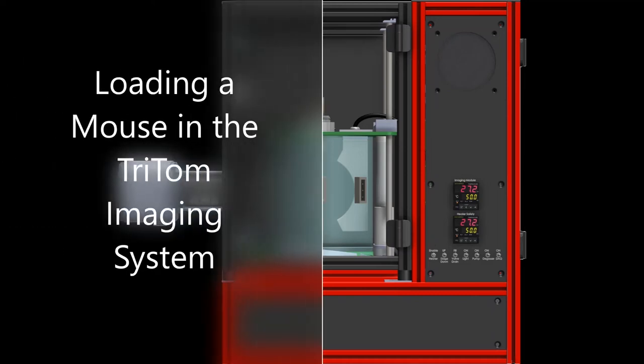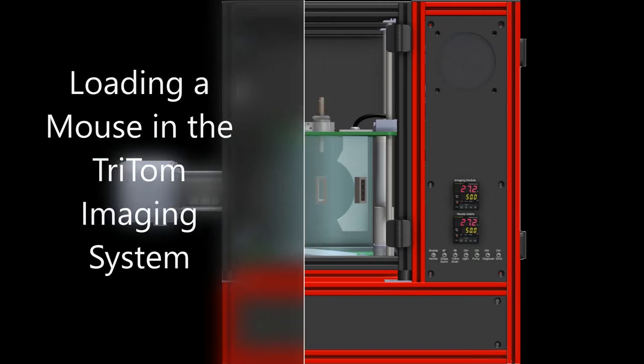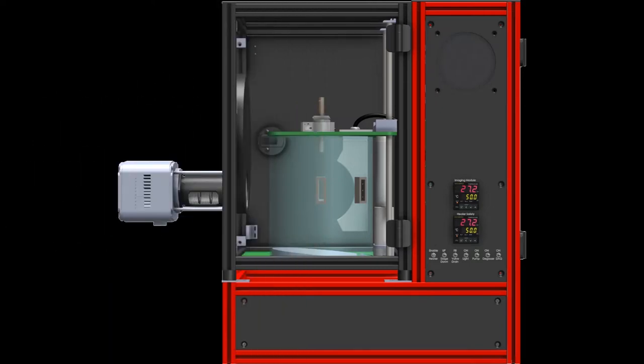This video demonstrates how to load a mouse in the Triton Small Animal Imaging Platform for an in vivo imaging experiment. Photosound Technologies recommends that users test these procedures prior to an in vivo imaging experiment to determine the target gas flow rates for their system.